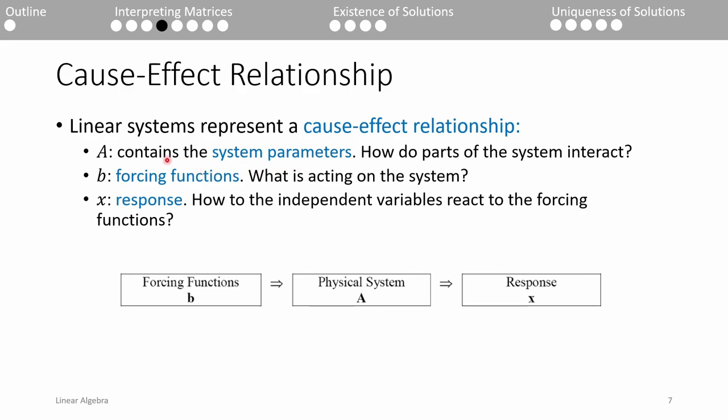The B vector represents the forcing functions. Basically, we apply some stimulus to our system. In a mechanics problem, the B vector could represent the forces we apply. In a circuit problem, the B vector could be the voltage sources. In a thermal problem, it could be how much we're heating. These constitute the right hand side of each of the m equations.